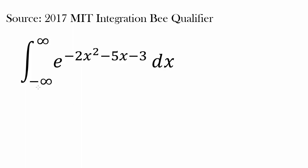We have the integral from negative infinity to positive infinity of e to the power of negative 2x squared minus 5x minus 3, dx. So we have a definite integral. One thing you may say is that maybe we need to find the antiderivative and use that to find the definite integral. But that's not going to work in this case because the antiderivative of this function is going to be non-elementary.